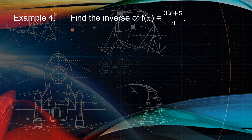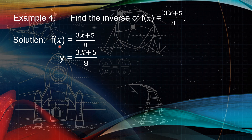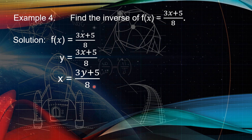Example number 4: find the inverse of f(x) equals 3x plus 5 over 8. Our first step is to change f of x into y, then copy equals 3x plus 5 over 8. Next step is to interchange x and y — y becomes x and x becomes y. The next step is to solve for y in terms of x. Since this is a rational equation, the first step is to find the LCD. Since there is only one denominator which is 8, it is the LCD. After finding the LCD, multiply it to both sides of the equation.